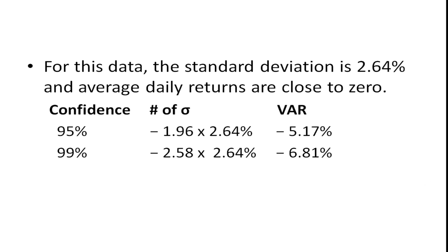So let's take a look at an example. For this data the standard deviation is 2.64 percent and the average daily returns are close to zero. So at 95 percent confidence we're going to take the minus 1.96 multiply it by the 2.64 and we're going to get a value of minus 5.17 percent. So we feel 95 percent confident that the loss is not going to exceed 5.17 percent. Likewise we can do it for 99 percent and we get minus 6.81 percent. And you'll notice if you want to be more confident, 99 percent confident as opposed to 95 percent confident, then the value at risk is going to be greater. You're going to have to move more to the left on that curve.